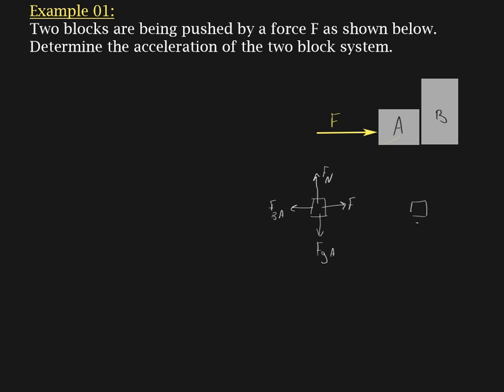Then our FBD for block B is going to be a normal force, and I'll just uniquely identify those with A's and B's. Then we have the force of gravity pointing down. And then we have block A is touching block B and pushing B to the right. So here we have the force of block A on block B.